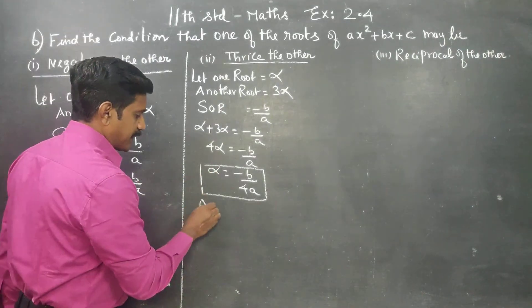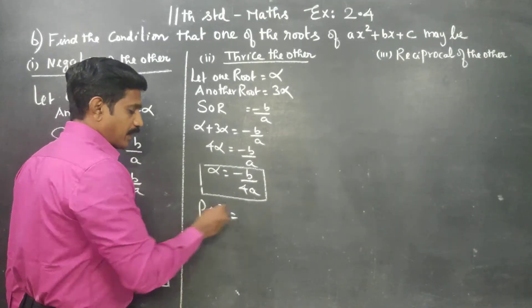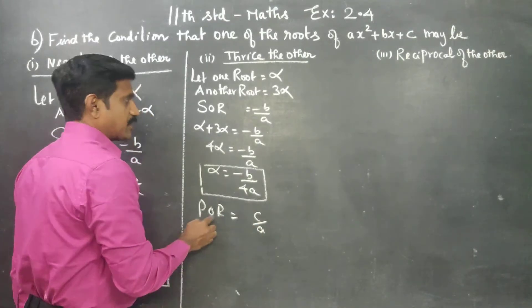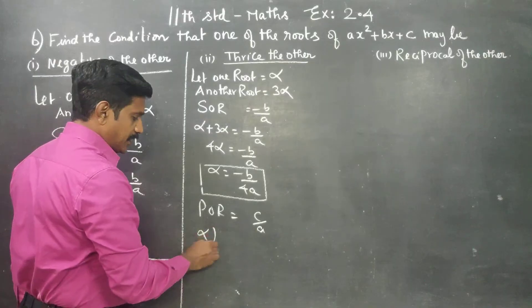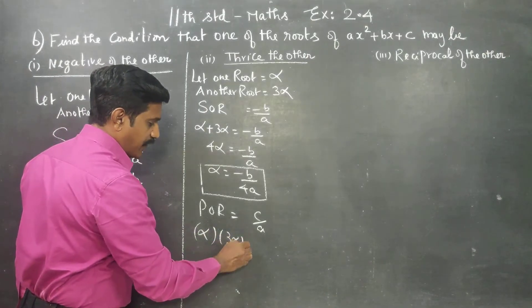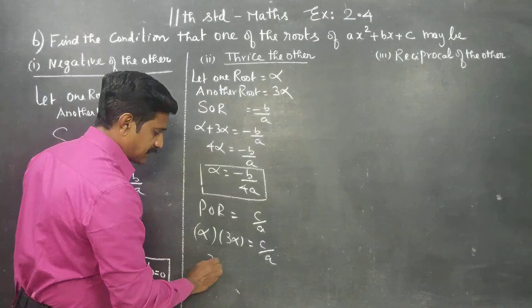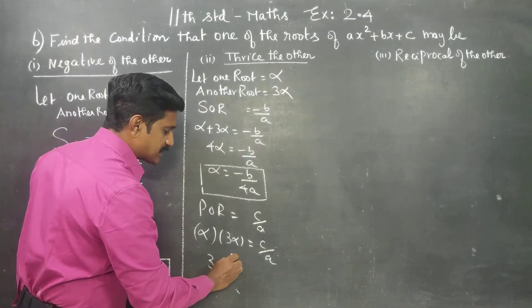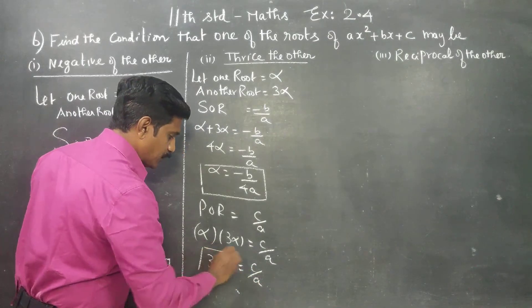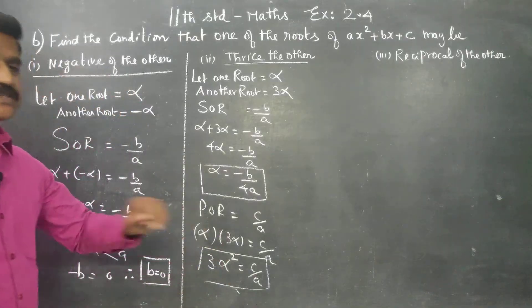Alpha is not a condition by itself, so we also use the product of the roots. Product of the roots is c by a. Alpha into 3 alpha is equal to c by a, so 3 alpha squared is equal to c by a.